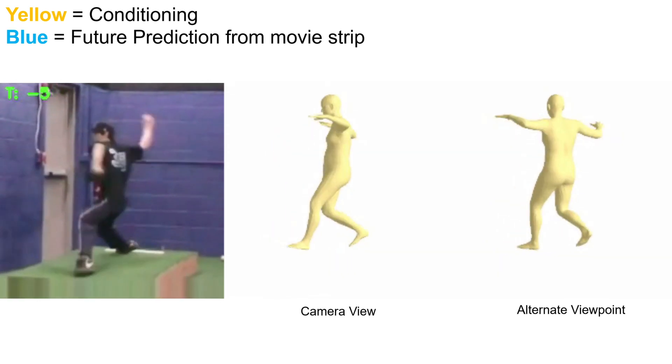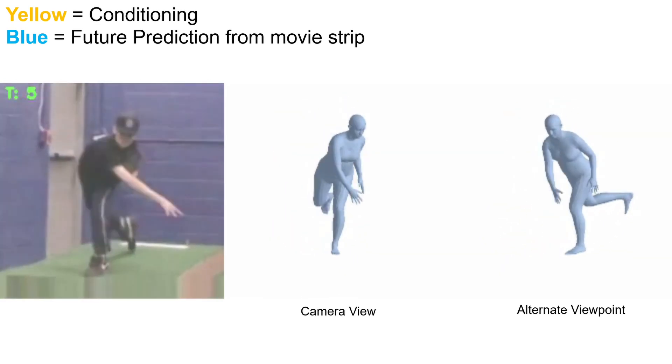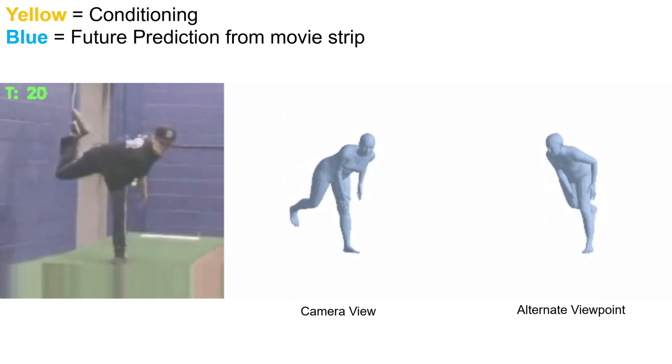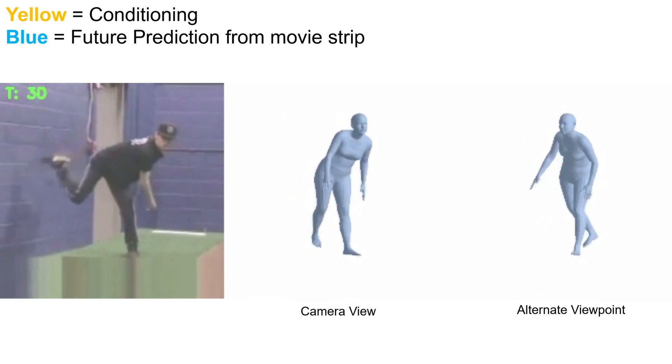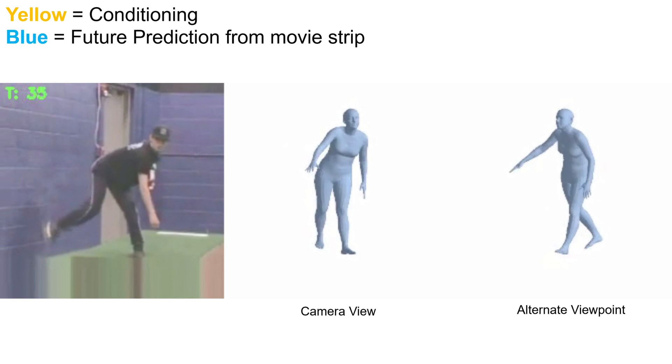Due to computational constraints, we only train our model to predict up to 25 future frames. But in these sequences, we show that the predictions are reasonable even past 25 frames.